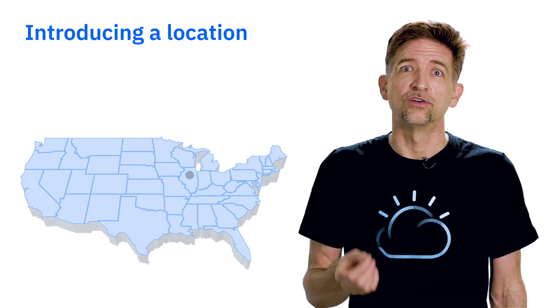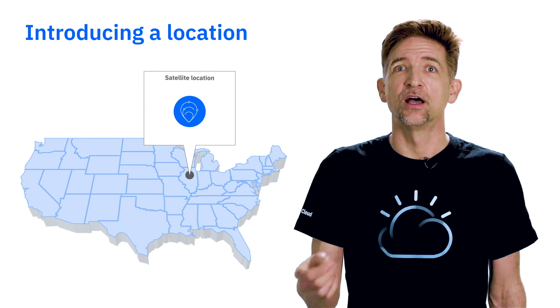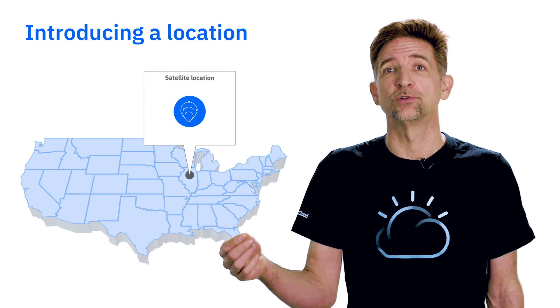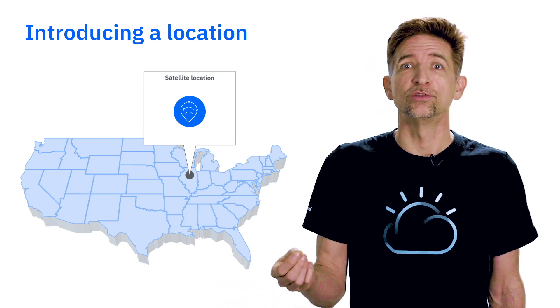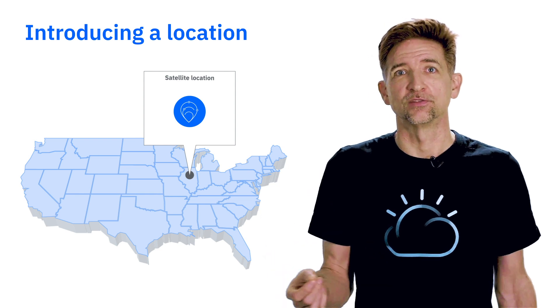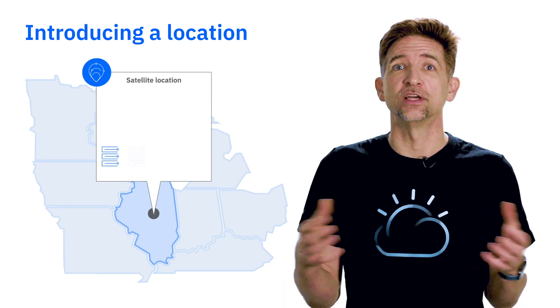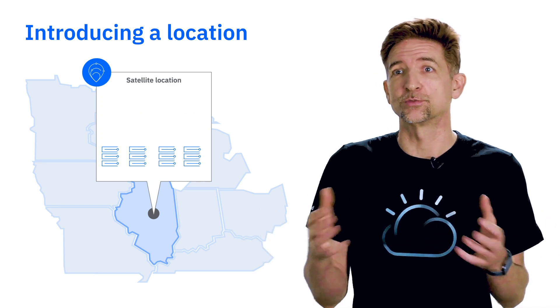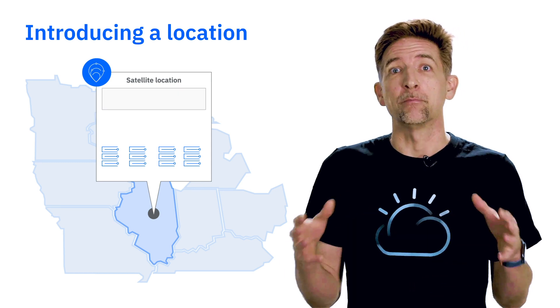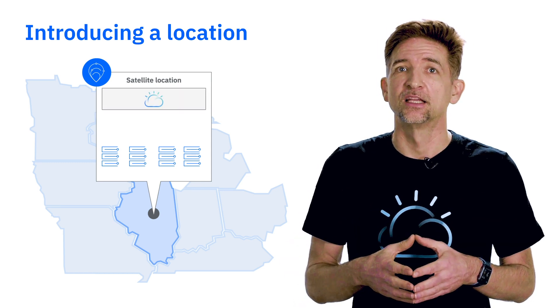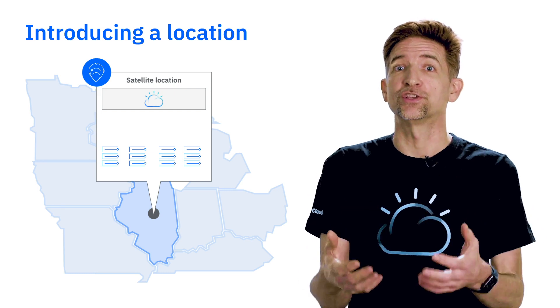Now how does this work? The key idea within Satellite that we're introducing is the notion of a location. A location is a way to define to IBM cloud a place outside of IBM cloud where you want to deploy and consume cloud services. It is a collection of infrastructure that you own that we're going to use on your behalf to run cloud services — essentially a collection of Linux hosts, virtual machines, or physical machines arranged together into a pool of resources managed automatically by Satellite.